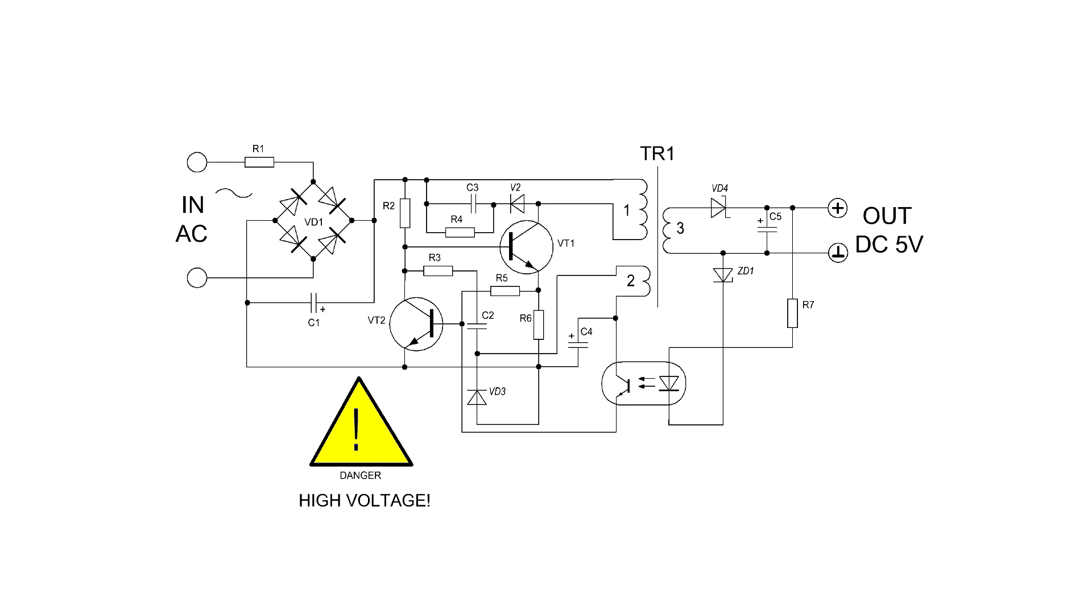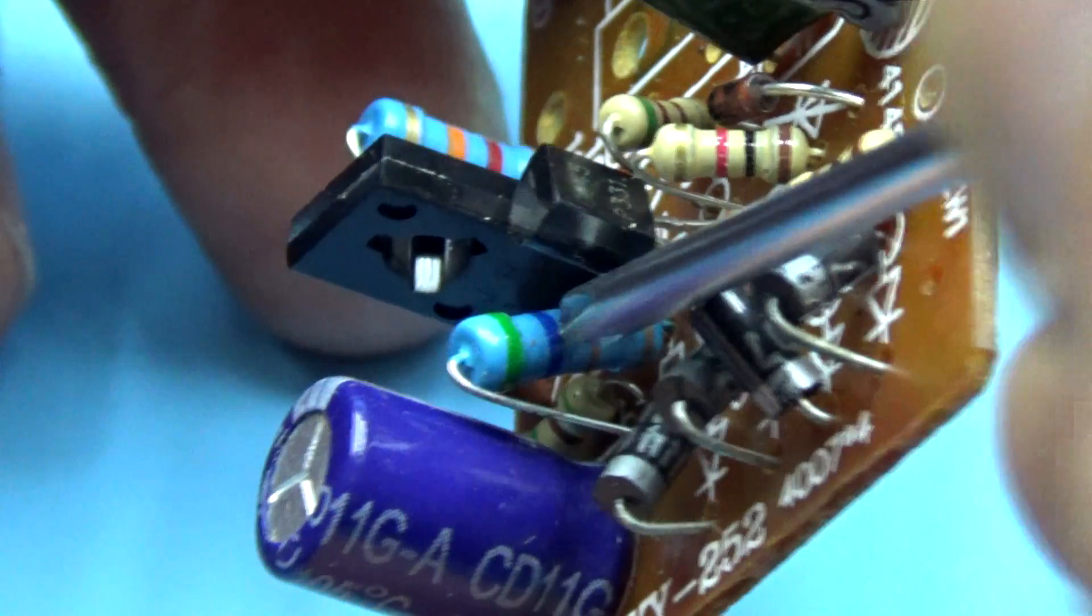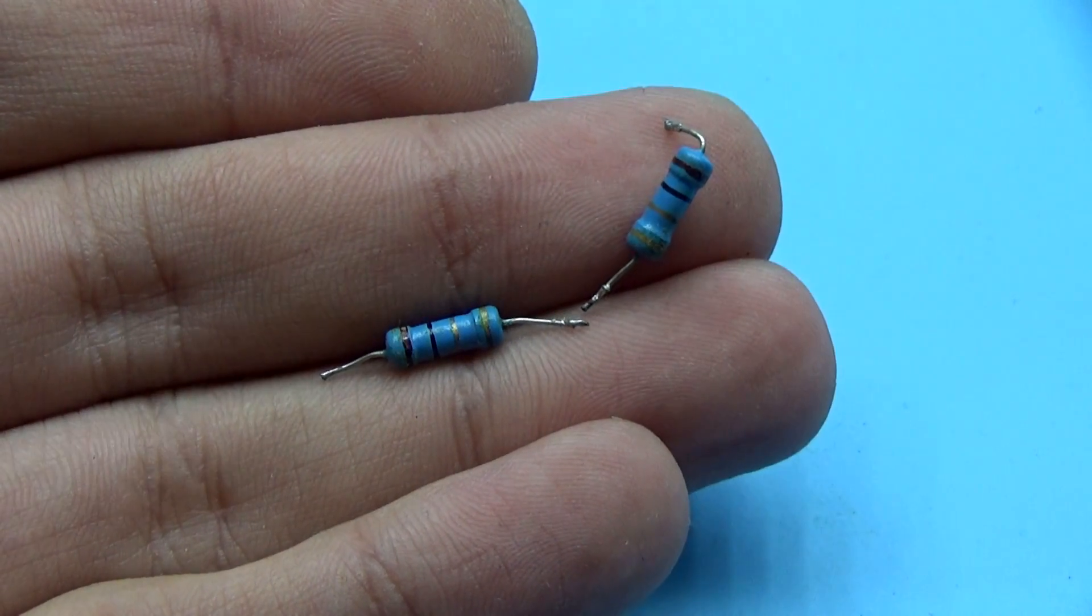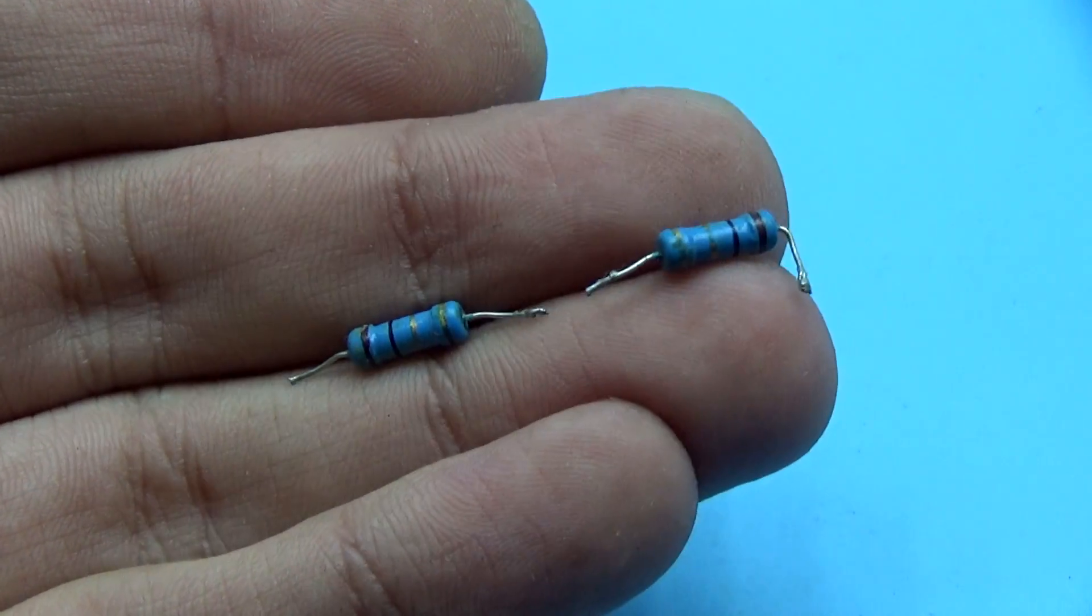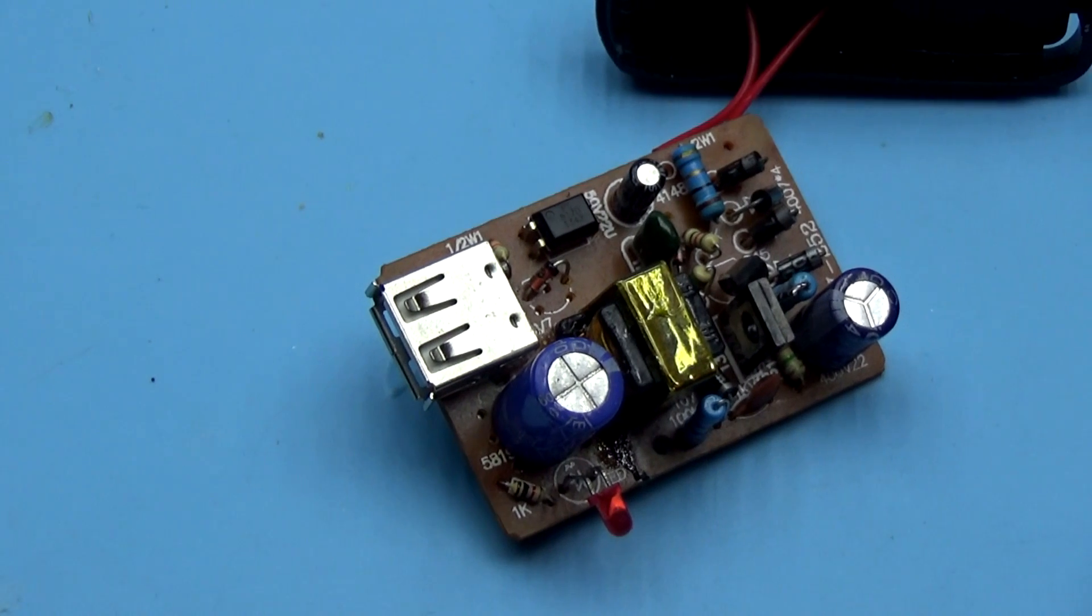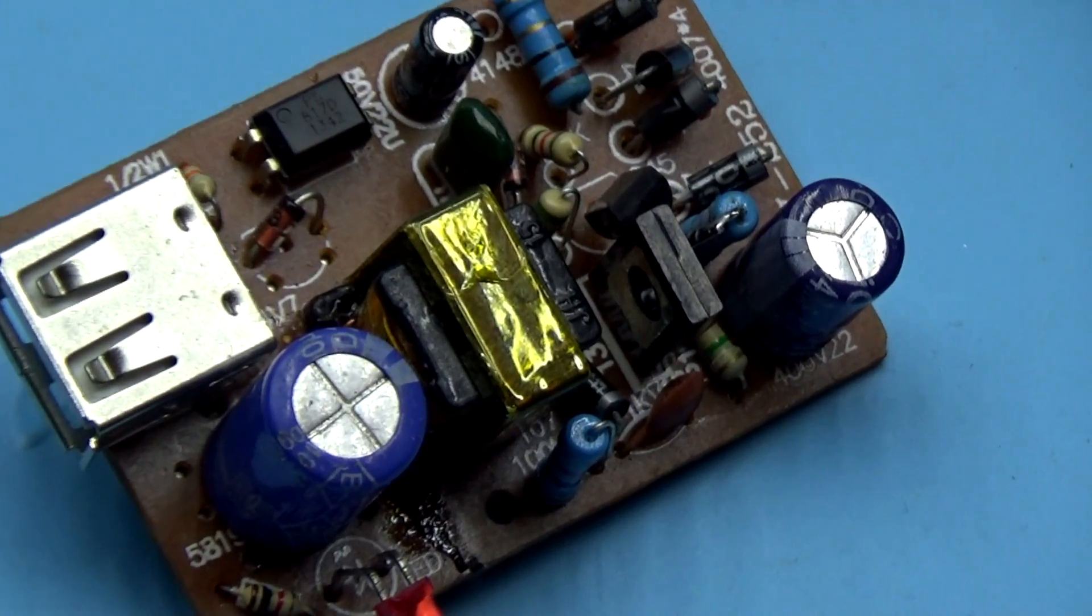So, reducing this resistor, we increase the protection current value. The resistor is half a watt. We replace it with a similar one. Only instead of 5.6 ohm must be taken from 2.2 to 3.3 ohm. Perhaps in your case, you will have to replace the transistor. I was lucky, because in my device, the factory transistor could pull desired additional power.